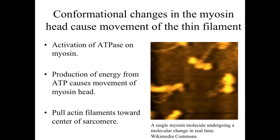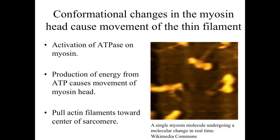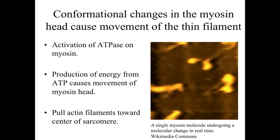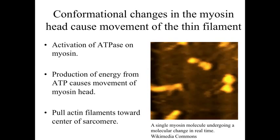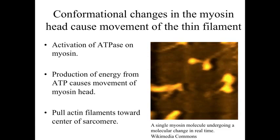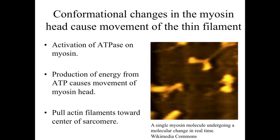What we have then is the ability of the golf club-shaped myosin molecule to undergo conformational shape changes. With the activation of ATPase on the myosin, we energize that head and allow it to ratchet back and forth. When it ratchets and it's attached to actin, it drags the actin along with it, pulling that actin filament towards the center of the sarcomere. We need ATP and the binding of myosin to actin; the conformational change — that shape change — drives the movement of actin and myosin relative to one another.